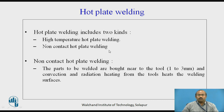Hot plate welding includes two kinds: high temperature hot plate welding and non-contact hot plate welding. In non-contact hot plate welding, the parts to be welded are brought near to the tool — 1 to 3 mm — and convection and radiation heating from the tool heats the welding surfaces.